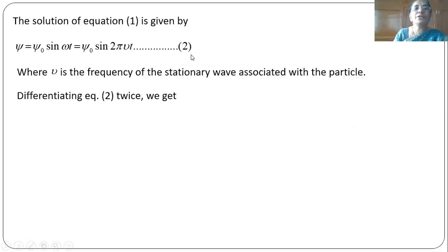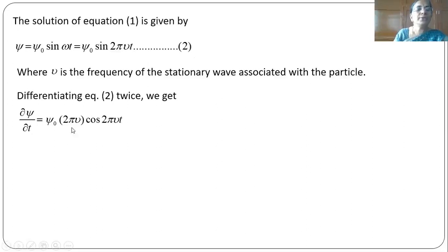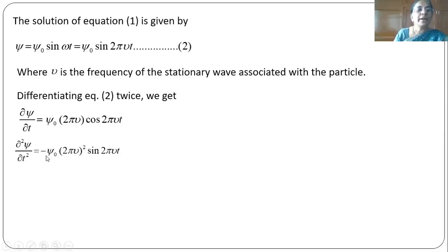Now let us differentiate equation 2 twice. We get ∂ψ/∂t equal to psi₀ · 2π ν cos(2π ν t). Differentiating again we get minus psi₀ (2π ν)² sin(2π ν t). The minus sign comes because when we differentiate cos it becomes sine with a minus sign. So ∂²ψ/∂t² equals minus psi₀ (2π ν)² sin(2π ν t).